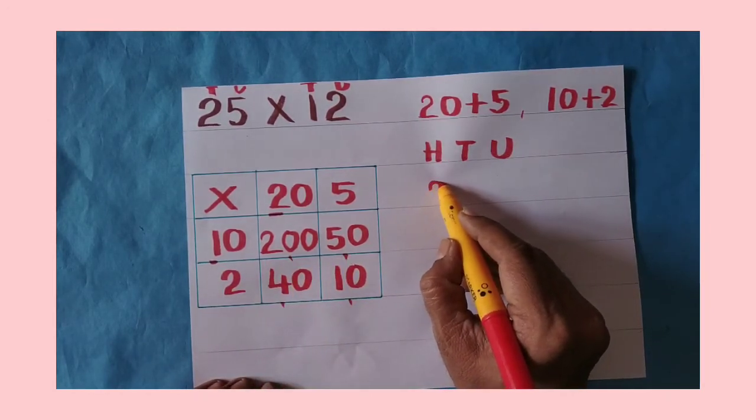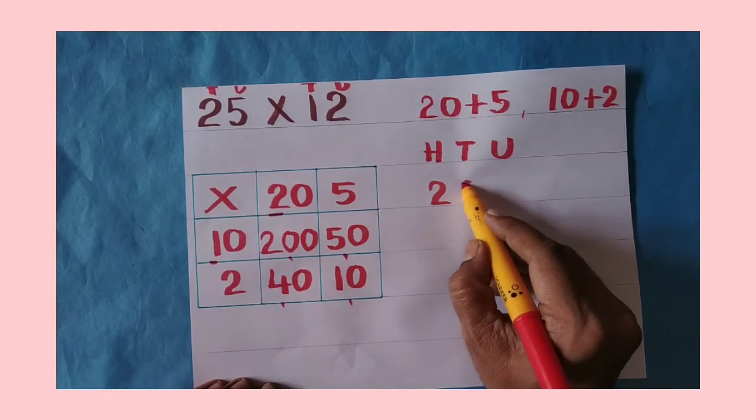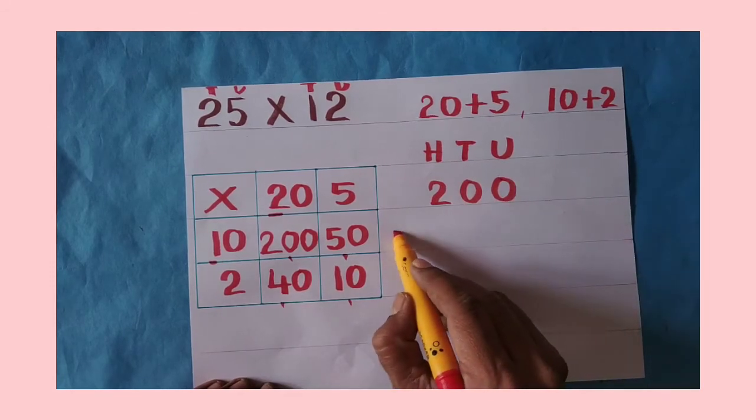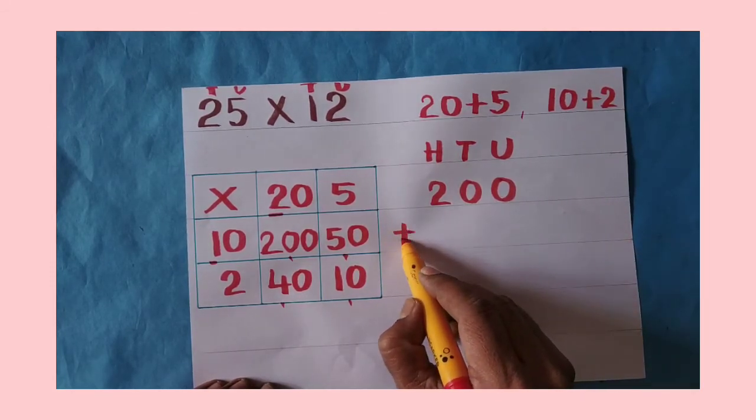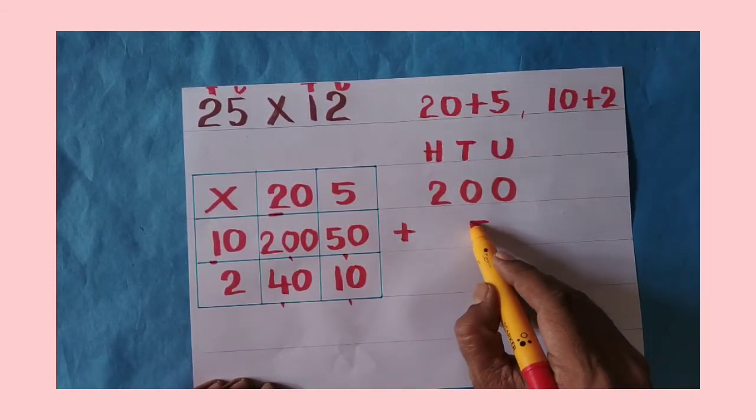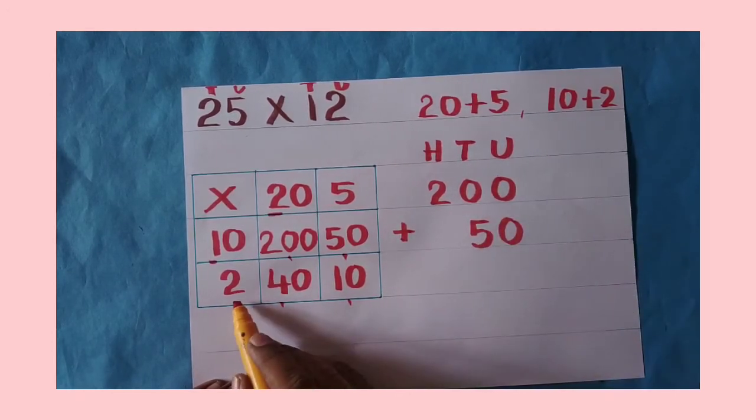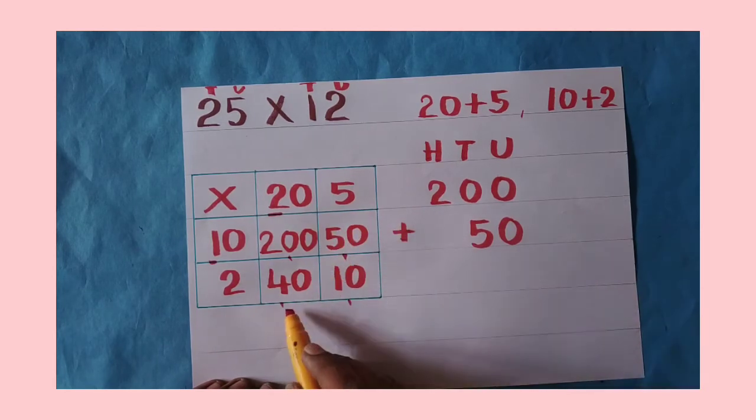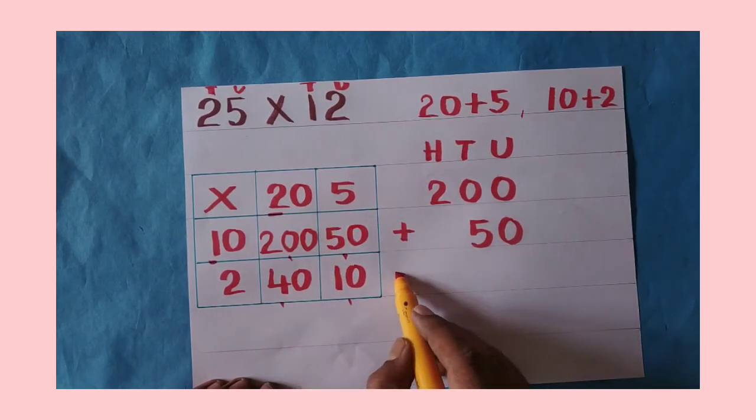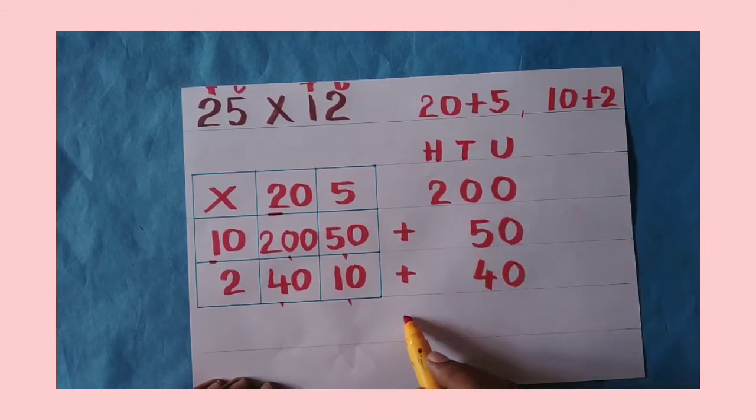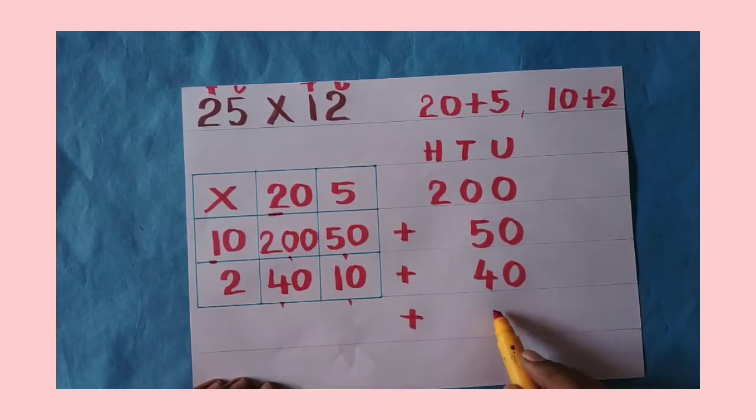First you write like this. Then what did we get from 10: 200 and 50. So write 200 first in proper right places. Don't do it in a hurry, write carefully. Plus 50. After that, from multiplying by 2, you need to write those answers also. Plus 40 and plus 10.